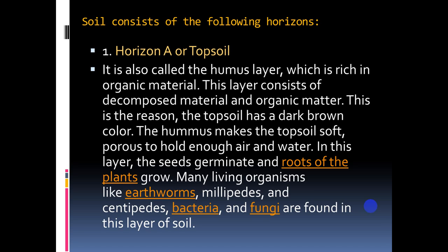The topsoil has a dark brown color. Humus makes the topsoil soft and porous to hold enough air and water. In this layer, seeds germinate and roots of plants grow. Many living organisms like earthworms — which you can quite often see in agriculture fields — also live in this layer.